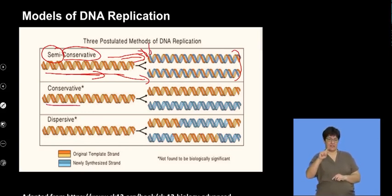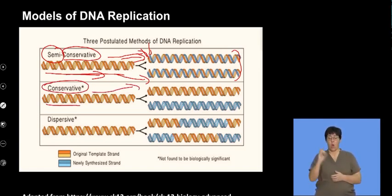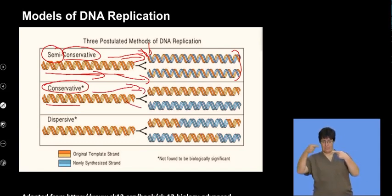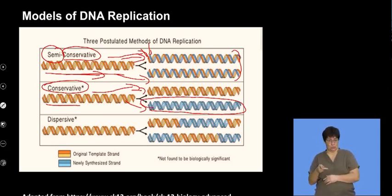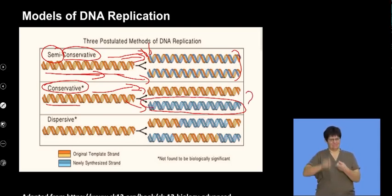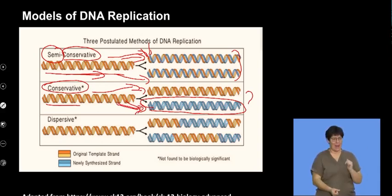The conservative model, as the word suggests, refers to keeping the old. It describes DNA being replicated where the original molecule is kept intact and an entirely new copy of DNA is produced — made up of entirely new synthesized nucleotides. Scientists have rejected this model because the frequency at which mutations would occur suggests this model would create a lot of faults in the DNA, essentially lots of mutations.